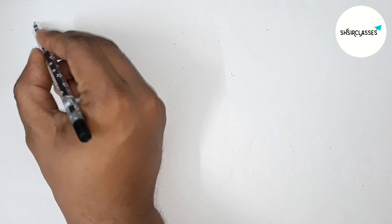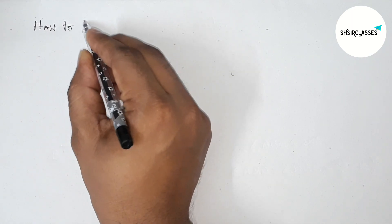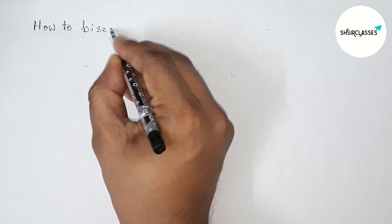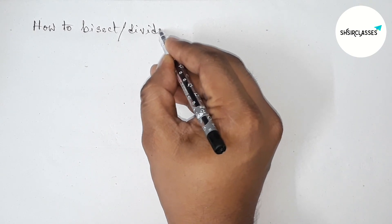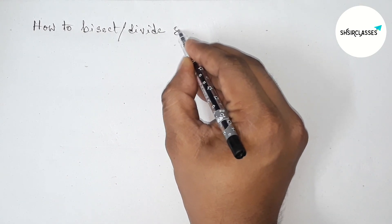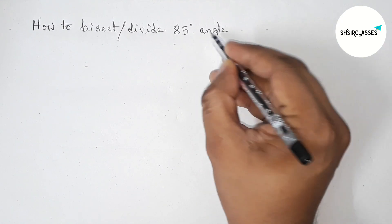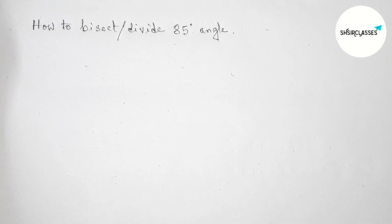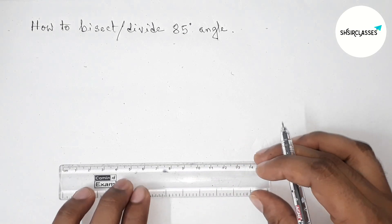Hi everyone, welcome to SideShare classes. Today in this video we're bisecting or dividing an 85 degree angle in an easy way. Please watch the video till the end. Let's start the video. First of all, let us draw here.